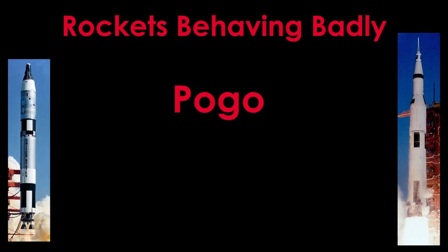Pogo is a longitudinal, forward and backwards vibration that occurs in rockets that use liquid-fueled engines. It was an issue with the Titan II missile, shown here in the Gemini 5 launch, and the Saturn V rocket, shown here in the Apollo 8 launch. Pogo can range from a minor annoyance to a mission-ending problem. Pogo is a complex phenomena.